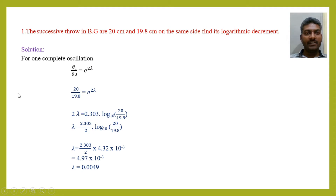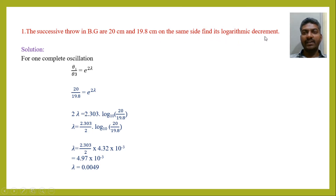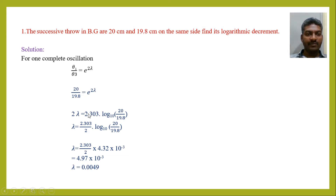Now let us see the first problem. The successive throws in a ballistic galvanometer are 20 cm and 19.8 cm on the same side. Find its logarithmic decrement. Since the deflections are on the same side, the first deflection is θ₁ and the third deflection is θ₃. For one complete oscillation we have θ₁/θ₃ = e^(2λ). Now let us take log on both sides, giving log e with base e as 1, so we get 2λ.